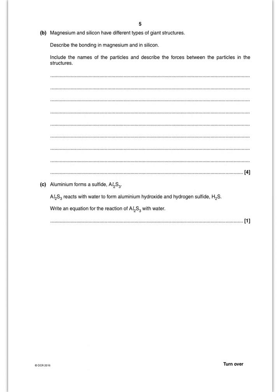For this next one then, magnesium and silicon, they have different types of giant structure. Magnesium is going to be giant metallic, and silicon is going to be giant covalent. So for magnesium, you've obviously got metallic bonds throughout the structure, and the bonds are between the Mg2+ ions and the delocalized electrons. For silicon, as I said, that's a giant covalent structure, so you've got covalent bonds between the silicon atoms.